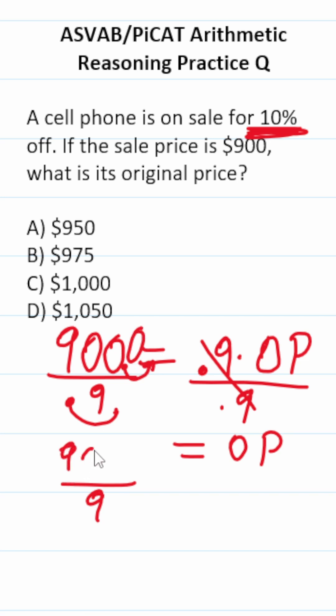So this becomes 9,000 divided by 9, which is simply 1,000. So the original price of this cell phone was $1,000.